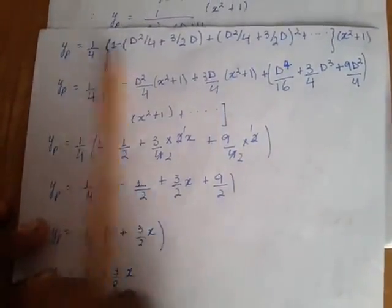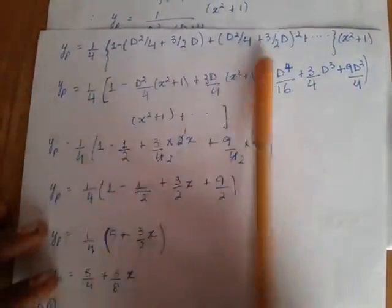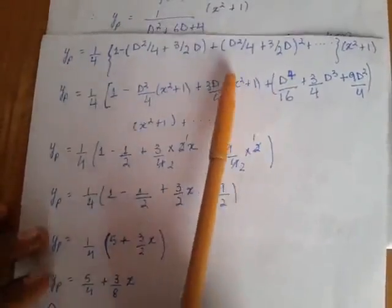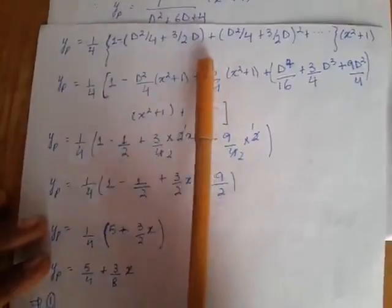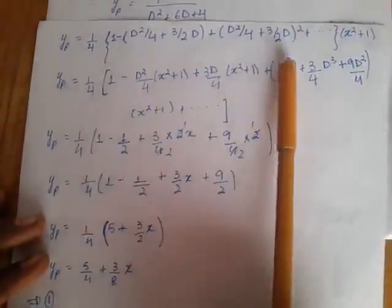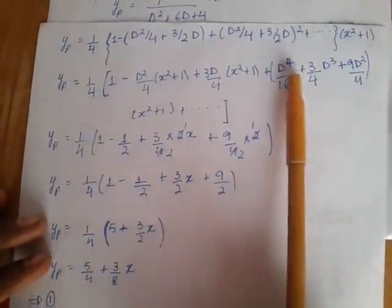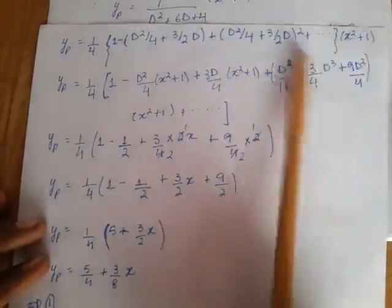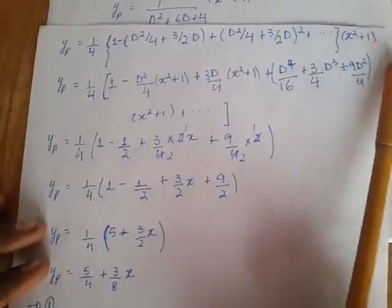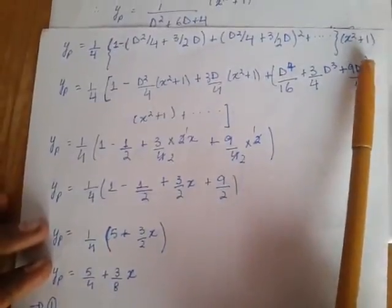yp equals 1 over 4, 1 and it is... But we don't have to use power 1 then 2 then 3. We have to see that here is x². Which meaning that it can be derived 3 times only.